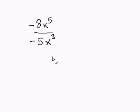and that simplifies to 8 over 5. Now, we have to divide our variable, and to do this, all you have to do is take the exponent from the numerator and subtract the exponent from the denominator.